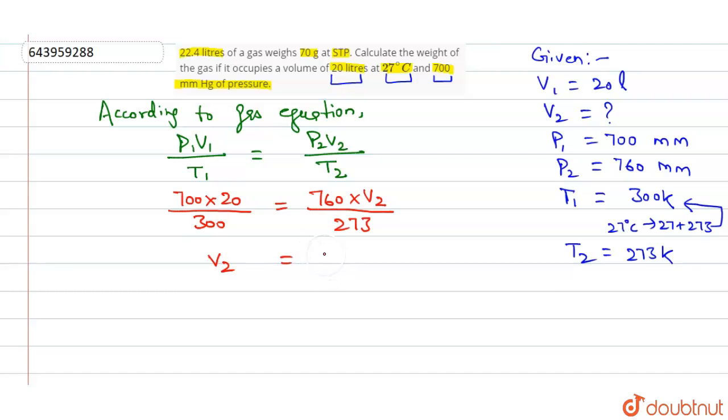V2 will be equal to 700 into 20 into 273 upon 300 into 760. You have to simplify it yourself.